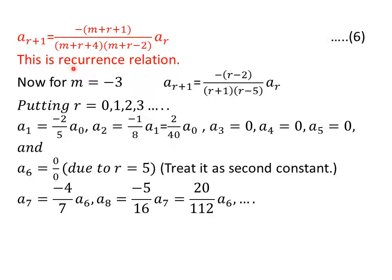So equation six is the recurrence relation. Putting m equal to minus three, we get a r plus one equal to minus r minus two upon r plus one times r minus five times a r. In this recurrence relation, put r equal to zero, one, two, three and we get a one equal to minus two by five a naught, a two equal to minus one upon eight a one. Again, put the value of a one here and we get two upon forty a zero.